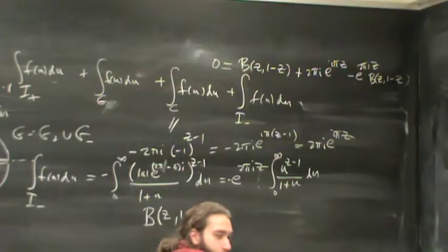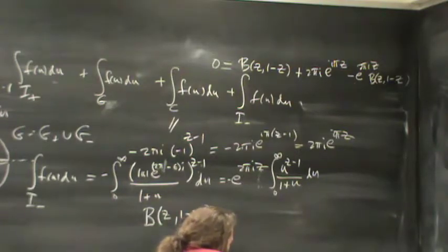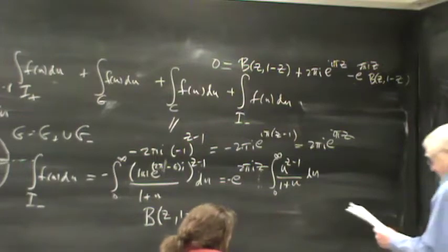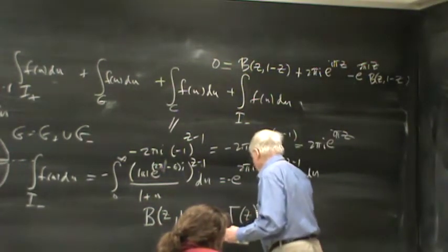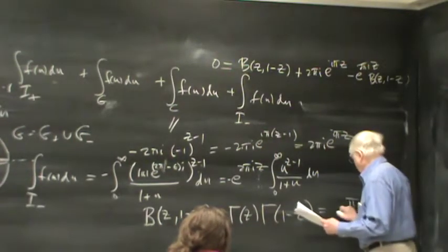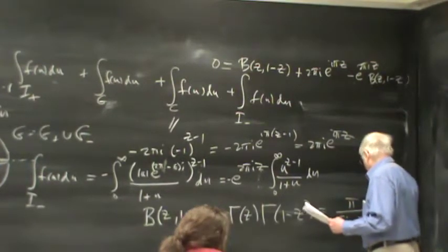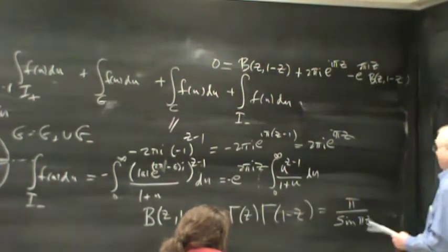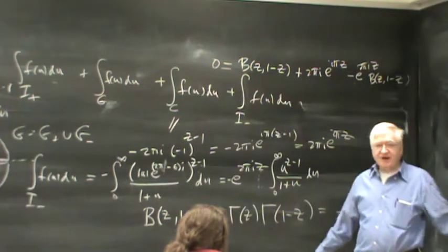So Euler's reflection formula is Γ(z)·Γ(1-z) = π/sin(πz). Alright, I think we can leave this topic now.